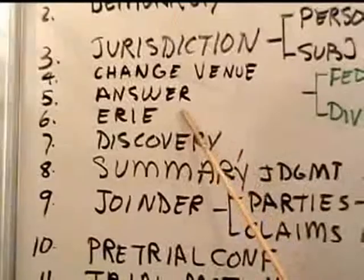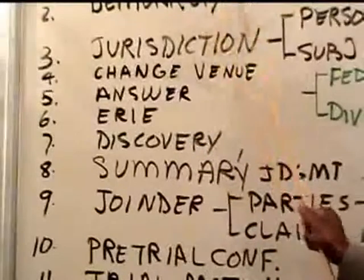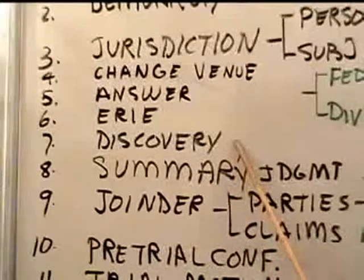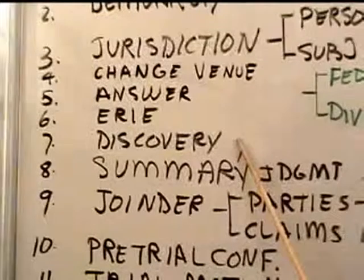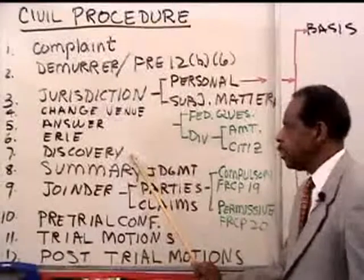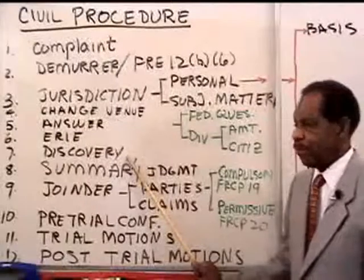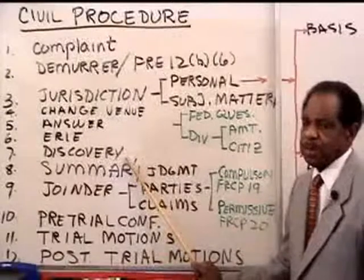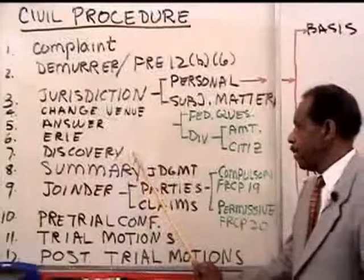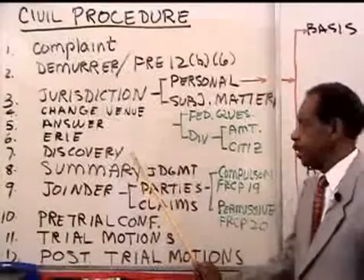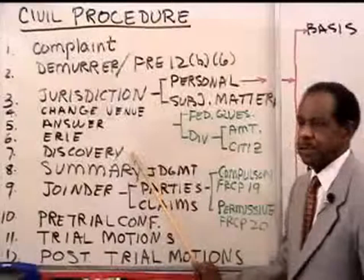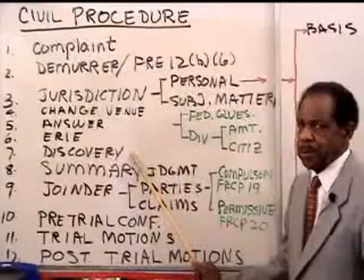Now at this point, we've filed a complaint, someone tried to dismiss it and it didn't go away, the court has jurisdiction, we're in the right court, the person has answered, and we know which law to use. Now we go to discovery. This is where each side tries to determine what evidence the other side has. You interview witnesses, depose witnesses, send out interrogatories, requests for admissions, inspect land and objects. There are six tools of discovery under the federal rules, and the bar examiners want to know that you know how to use each of those.